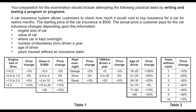As discussed in the previous video, we have a car insurance system. We need to get user input for the engine size, some parameters for the value of the car, where the car is kept overnight, number of kilometers driven a year, age of the driver, and years insured without an insurance claim. This is Table 1, and Table 2 is separate from Table 1.